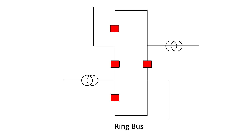If a fault occurs in this configuration, it is isolated by tripping a breaker on both sides of the circuit. By tripping two breakers, only the faulted circuit is isolated while all the other circuits remain in service.